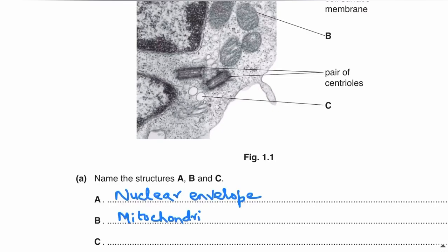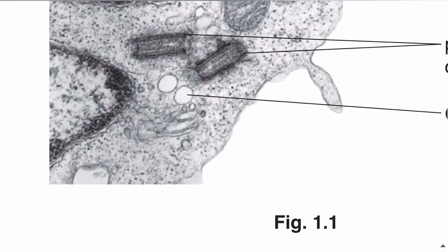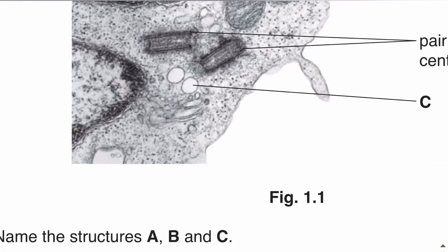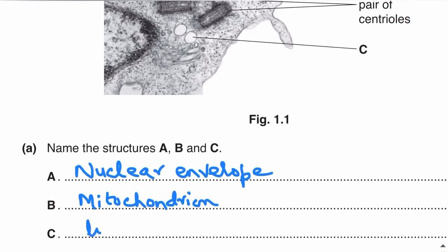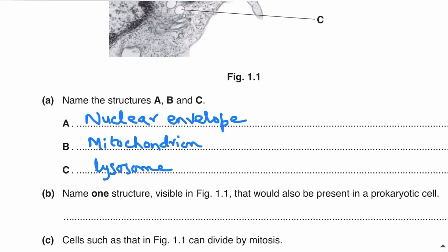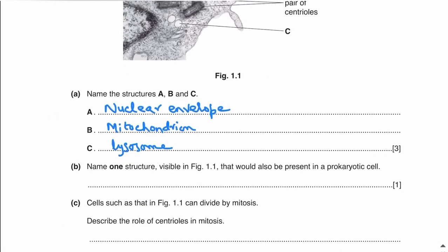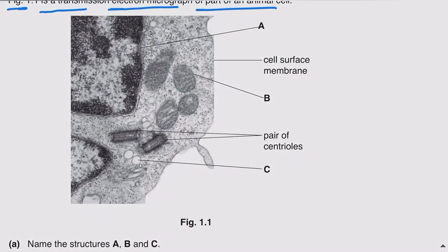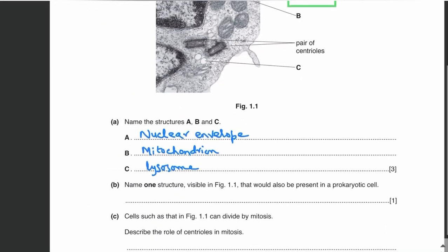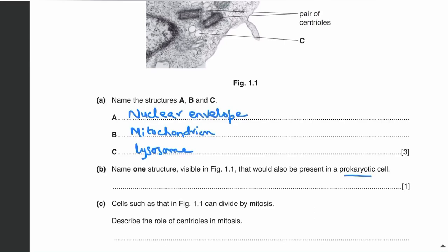Structure C is a large vesicle in the cell — this large vesicle is the lysosome. Name one structure visible in figure 1.1 that would also be present in a prokaryotic cell. The cell surface membrane is visible in this diagram, and the cell surface membrane is also found in prokaryotic cells. So the answer is cell surface membrane.